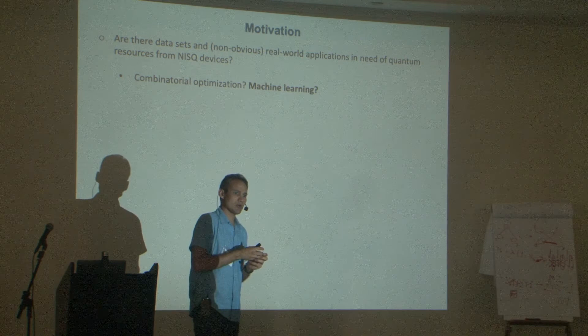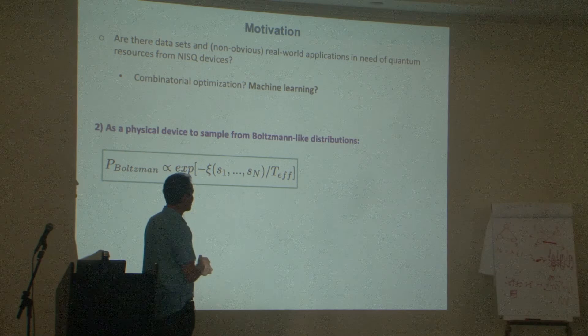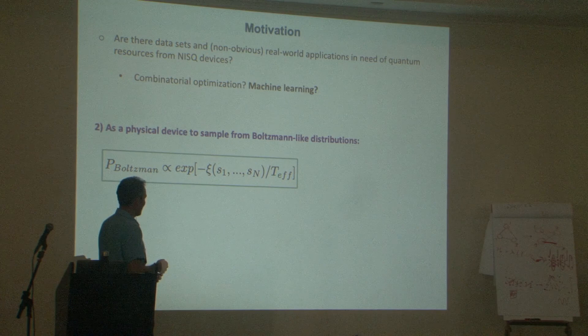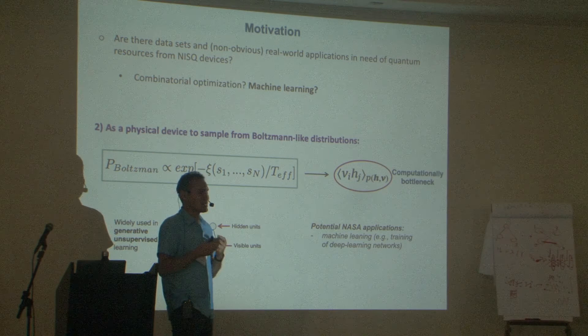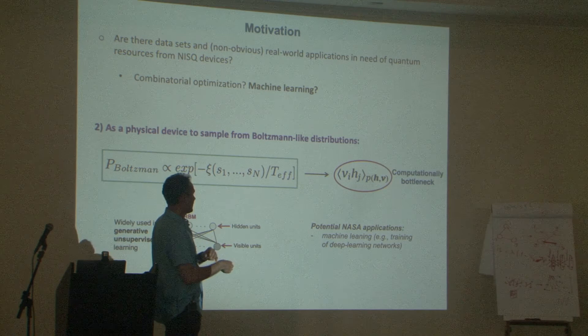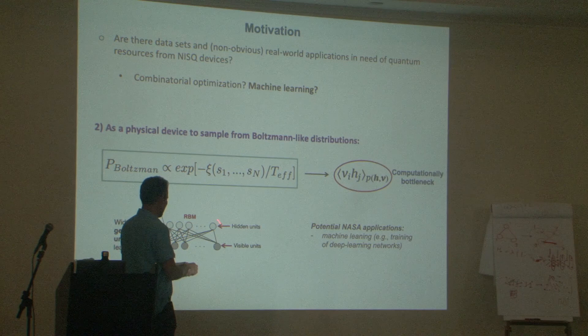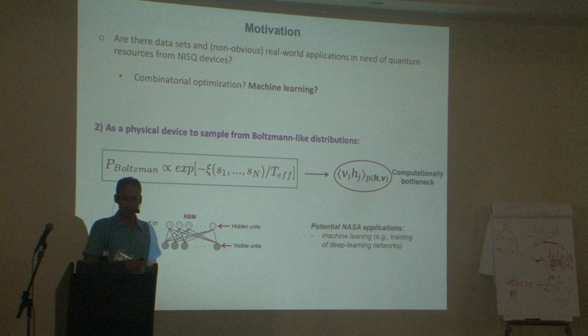Our motivation is the same: we want to spot real-world applications. One capability of quantum annealing devices is that you can sample approximately from Boltzmann distributions. This is helpful because there is a piece within the training pipeline that is very difficult to compute—the Monte Carlo procedures that are intractable. If you can sample from a Boltzmann distribution, you can speed up the process or get better models. One application is in the training of RBMs, and potential applications related to deep learning were part of our work.